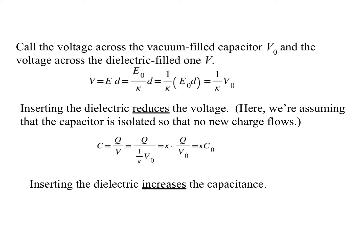Let's call the voltage across the vacuum filled capacitor V sub zero, and the voltage across the dielectric filled one just V. Here we're generally using zero as meaning reference to the vacuum. And we can see that our voltage is E times D, and that's E naught over kappa times D, which is one over kappa times E naught times D, which is one over kappa times the original voltage.